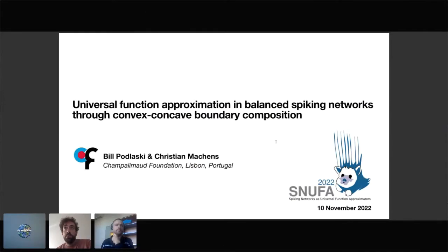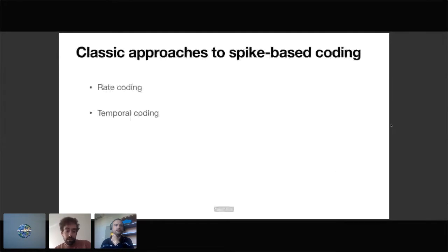Thanks very much for the introduction, and thanks to the organizers for giving me the chance to speak about my work today. I'm going to be talking about this joint work with Christian Machens on using excitatory-inhibitory spiking networks for universal function approximation.